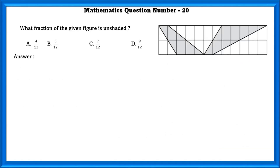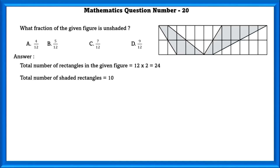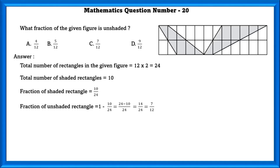Mathematics question number 20. What fraction of the given figure is shaded? The total number of rectangles in the given figure is 24. Total number of shaded rectangles is 10. So the fraction of shaded rectangles is 10/24, and the fraction of unshaded rectangles is 1 − 10/24, that is 7/12.